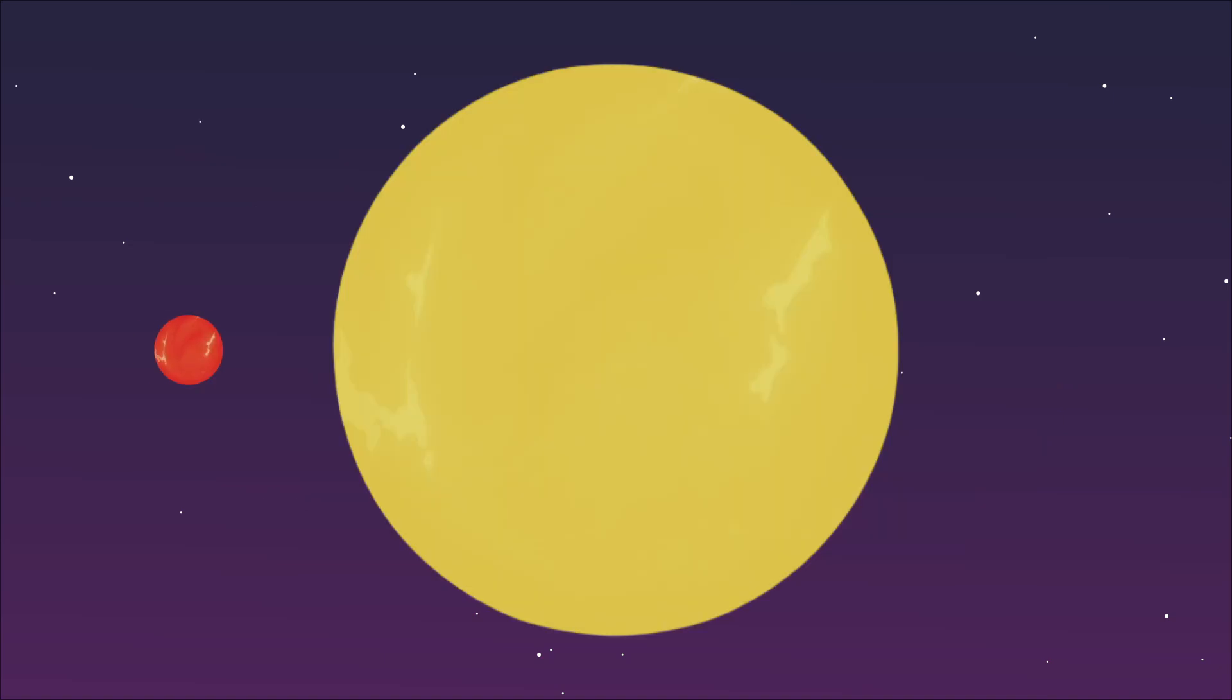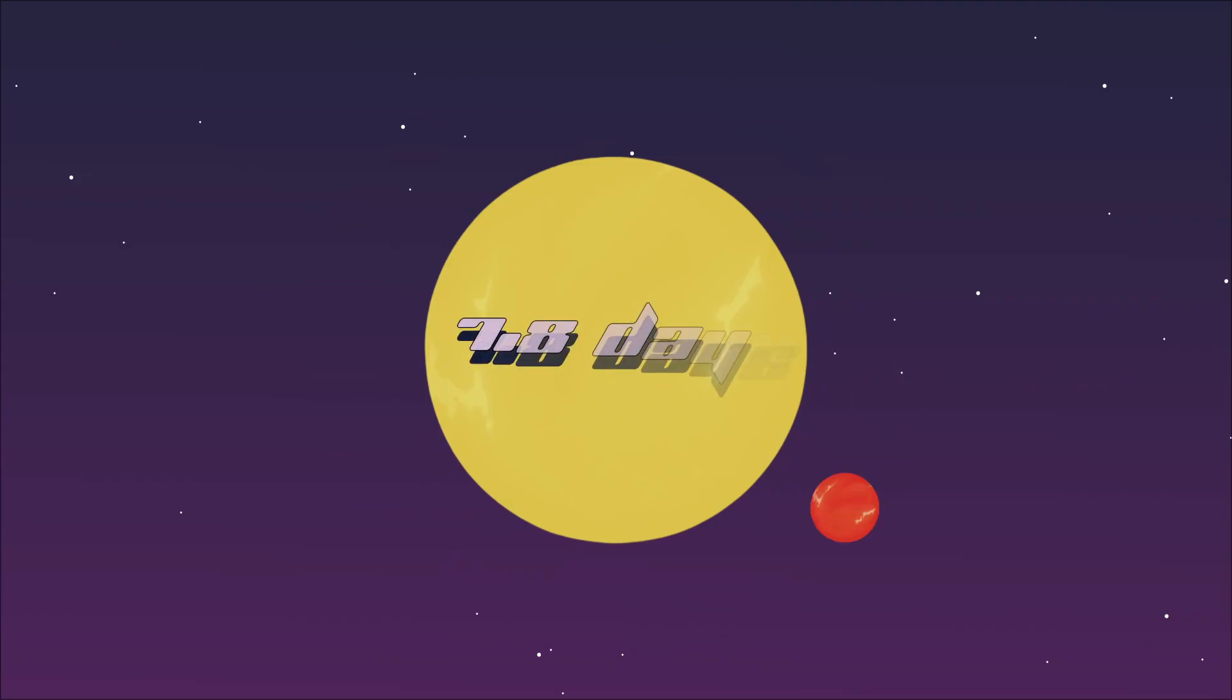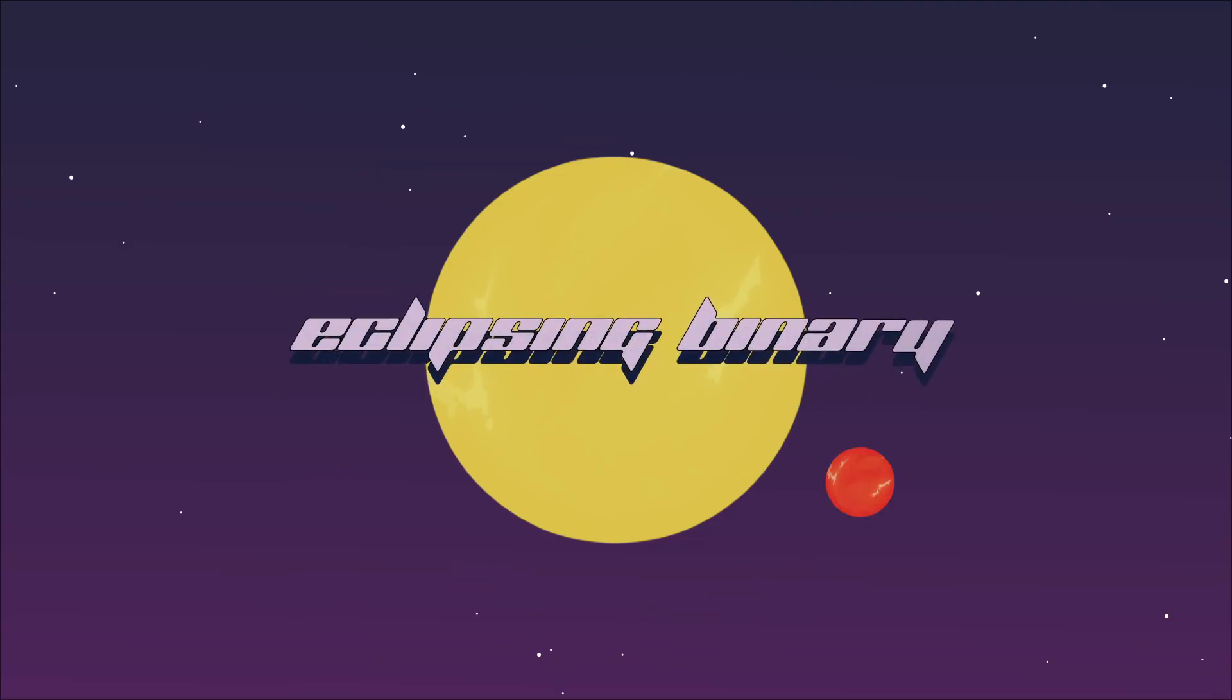I was found with the transit method when I eclipse my primary star. I take 7.8 days to orbit my primary star - an eclipsing binary system.